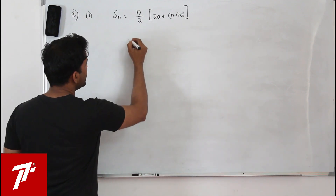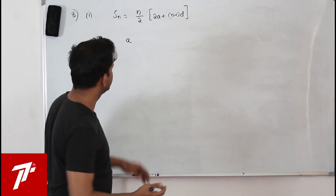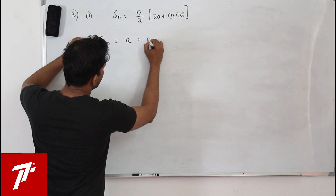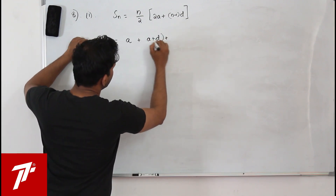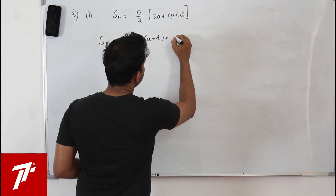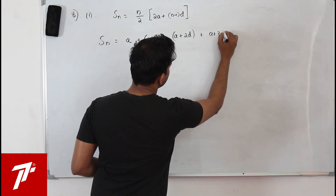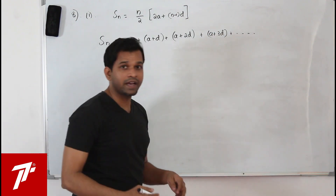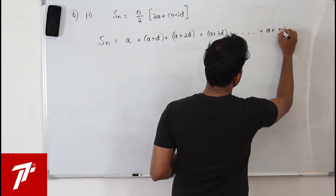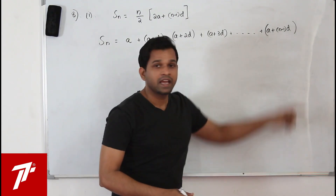Let's say we are given the first term is a and the common difference is d. So your sum of n terms will be: first term a, second term a plus d, third term a plus 2d, fourth term a plus 3d, and so on, up to the nth term which is a plus n minus 1 into d. You have n terms in total.